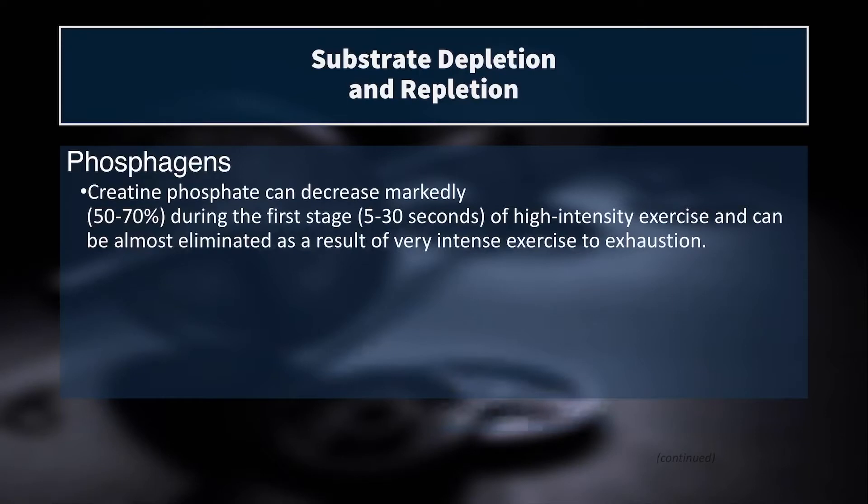We've been talking about the three different energy systems: the phosphagen system, the glycolytic system — which can be fast and anaerobic or slow and aerobic — and the oxidative phosphorylation system. These three energy systems all depend on certain substrates to run. The phosphagen system depends on creatine phosphate. The glycolytic system depends on glucose or glycogen, and the oxidative phosphorylation system can use glucose, protein, or fats.